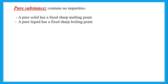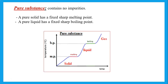If I have a pure substance, it will have a fixed, sharp melting point and a fixed, sharp boiling point. For example, pure water — pure ice will melt at zero degrees Celsius, and pure water will boil at a hundred degrees Celsius. So a pure substance will have a fixed sharp melting point and a pure liquid will have a fixed sharp boiling point.